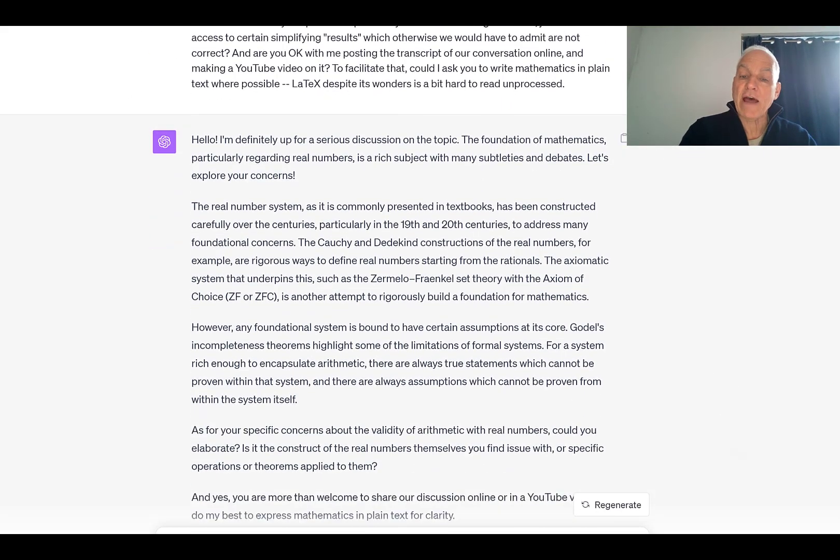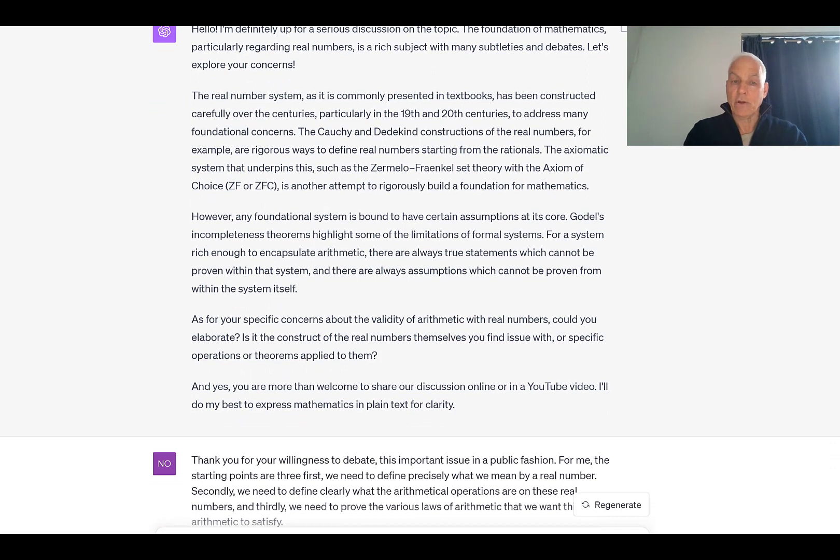Gödel's incompleteness theorems highlight some of the limitations of formal systems. For a system rich enough to encapsulate arithmetic, there are always true statements which cannot be proven with that system, and there are always assumptions which cannot be proven from within the system itself. As for your specific concerns about the validity of arithmetic with real numbers, could you elaborate? Is it the construct of the real numbers themselves you find issue with, or specific operations or theorems applied to them? And yes, you're more than welcome to share our discussion online or in a YouTube video. I'll do my best to express mathematics in plain text for clarity.